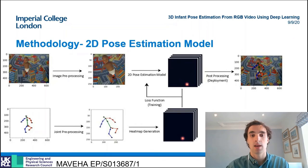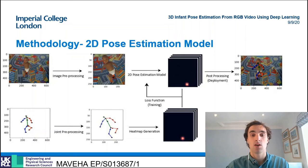In the adult domain it has been found that models that estimate the probability of key points present at all pixel locations to form a heat map outperform those that directly regress key point locations.